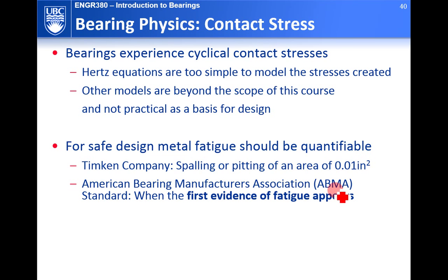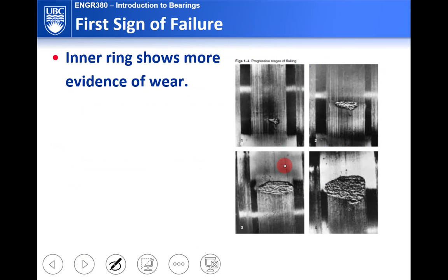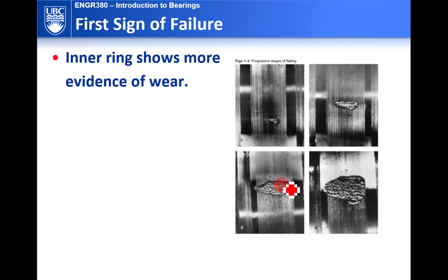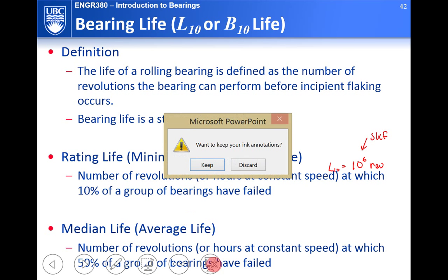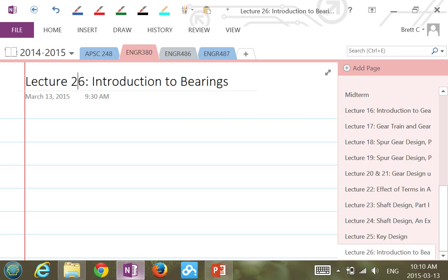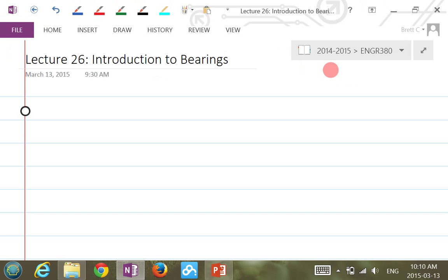For safe design, we want to prevent fatigue failure. The Timken Company standard defines failure as spalling or pitting over an area of 0.01 square inches. The American Bearing Manufacturers Association (ABMA) standard states failure occurs at the first evidence of fatigue. Once spalling begins, the affected area grows progressively larger.